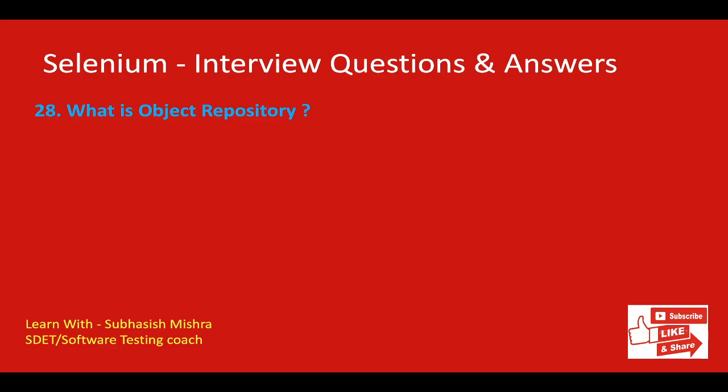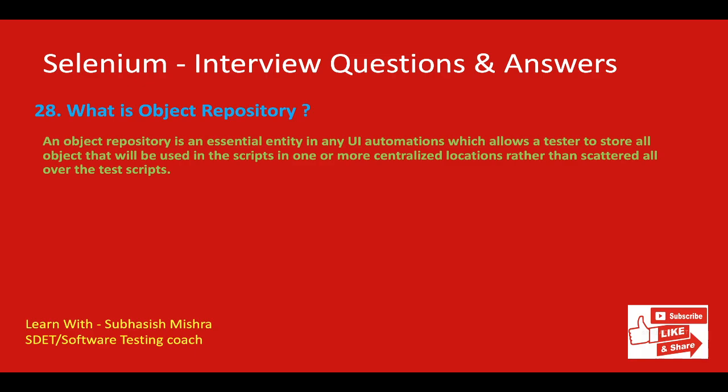What is an object repository? An object repository is an essential entity in any UI automation that allows a tester to store all objects used in scripts in one or more centralized locations rather than scattered across test scripts. What is the Page Object Model? Page Object Model is a very important design pattern where every webpage of the application has a corresponding page class responsible for locating web elements and performing actions on them. It creates an object repository for web elements, improves code reusability and readability, and allows multiple test cases to run on the object repository.